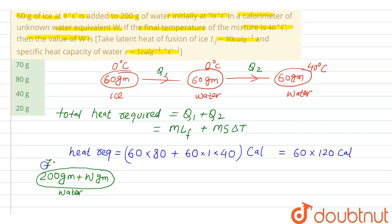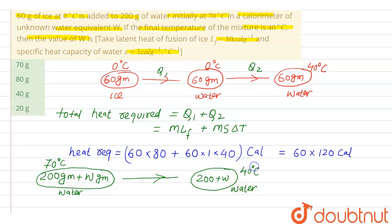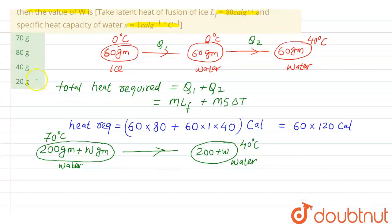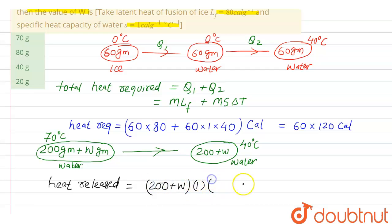Initially at 70 degree Celsius, it is cooling down to 40 degree Celsius. So the (200 + W) gram of water cools from 70 to 40 degree Celsius. Heat released equals mass × specific heat × change in temperature = (200 + W) × 1 × 30 calories. This is equation two, representing the heat released when the water and container cool from 70 to 40 degrees.